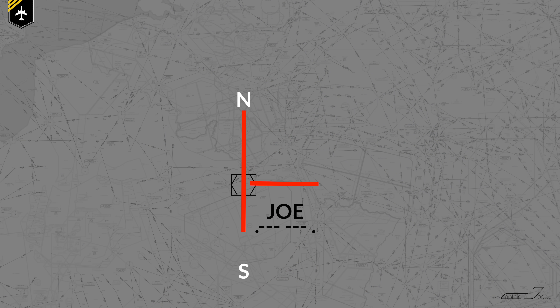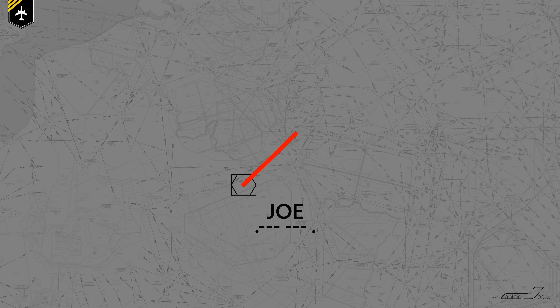Imagine a holding fix on a map. Draw a north-to-south line and an east-to-west line — where the lines cross is your holding fix — and then determine the north-east sector. The controller then mentions the radial you should fly on; in this example, 045. Keep in mind radials are drawn away from the station, so draw a line from the fix heading towards 045.